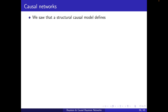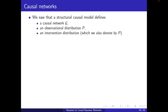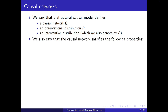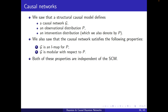We saw that a structural causal model defines the following: a causal network G, an observational distribution P, and an intervention distribution, which we also denote by P for simplicity. We also saw that the causal network satisfies the following properties: G is an IMAP for P, and it's modular with respect to P. Both of these properties are independent of the SCM — I don't need to know the equations or the exogenous variables to get these two properties.